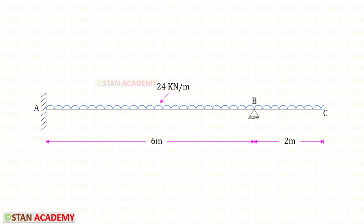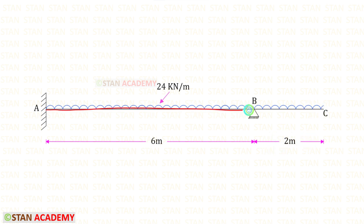Hello everyone. Today we are going to analyze this propped cantilever beam. In this beam we have the span AB which is 6 meters long, and we have the overhanging part BC which is 2 meters long. In the span AB and in the overhanging portion there is a uniformly distributed load of 24 kilonewtons per meter.